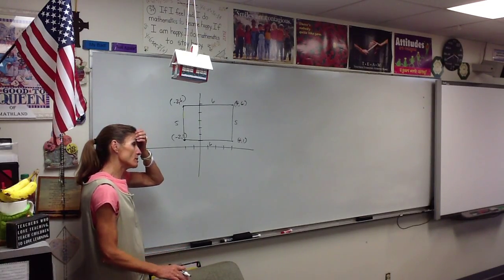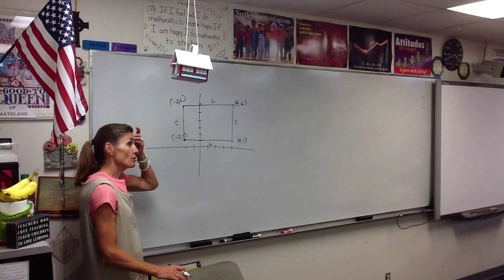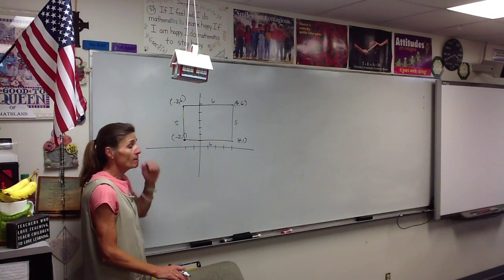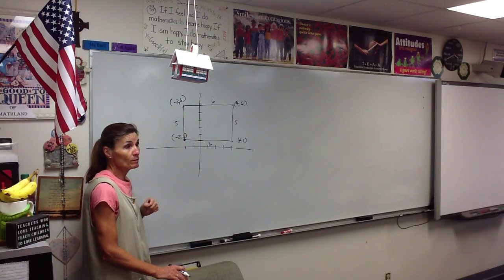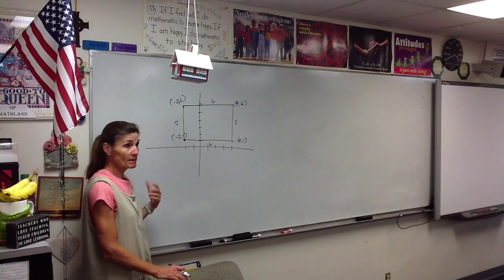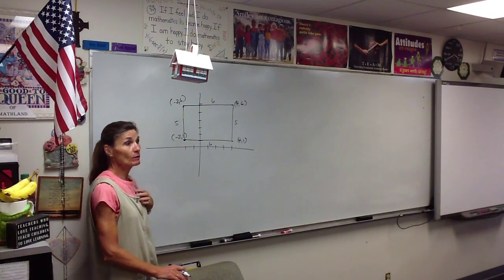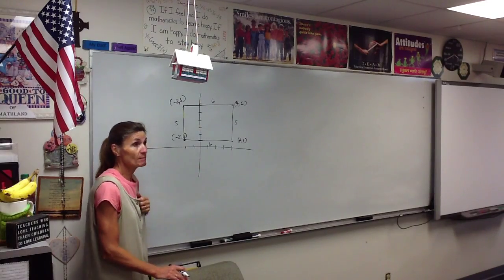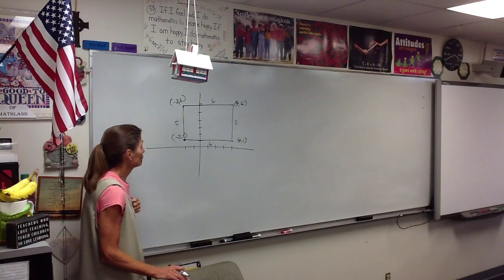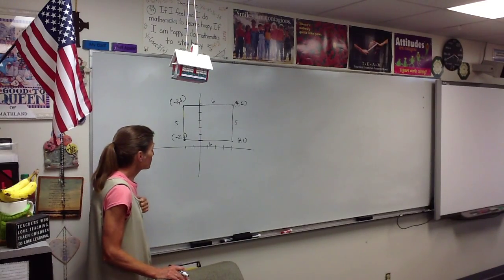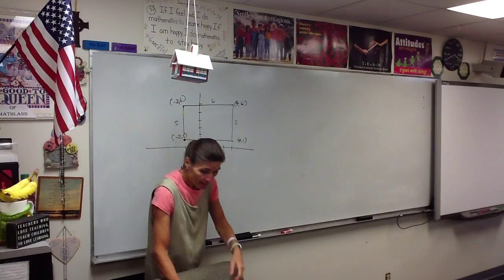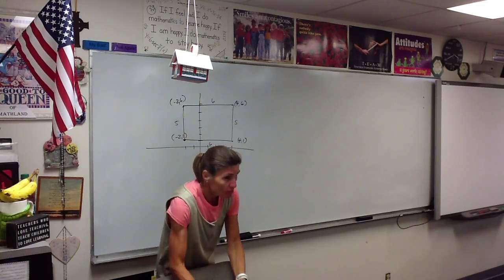Now if one of those is a triangle, you're going to do everything exactly the same way, but your area wouldn't be base times height — your area would be one half base times height.